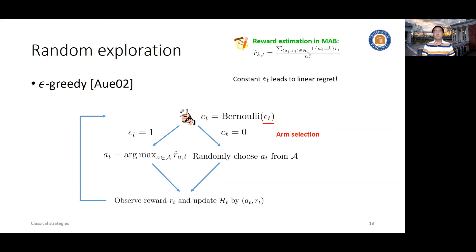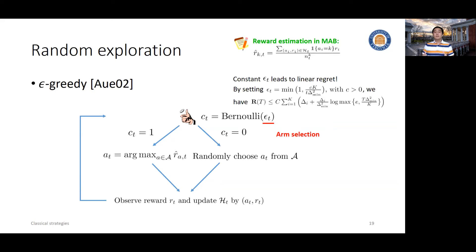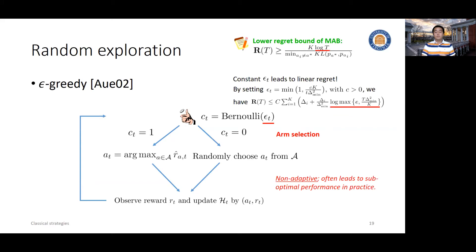The key in designing this epsilon-greedy algorithm is the epsilon parameter. If we naively use a constant epsilon, it will lead to linear regret because we have a non-zero constant probability of randomly choosing a sub-optimal arm. We prefer sublinear regret, so we need a shrinking epsilon. Technically, if we set epsilon in a rate of approximately 1 over T, we can guarantee sublinear regret — still in the log T scale, which is satisfactory. However, in practice, this algorithm is non-adaptive: the exploration is independent of the current quality of reward estimation, so it often leads to sub-optimal performance.